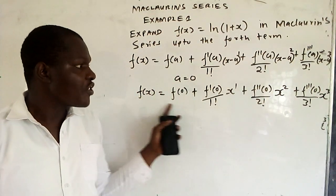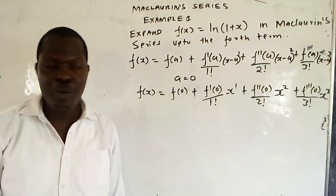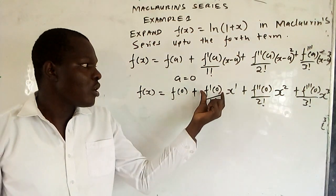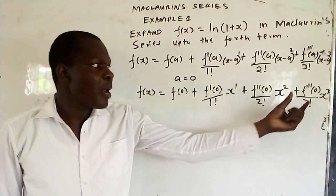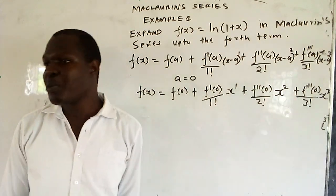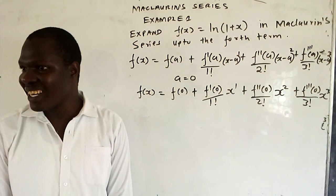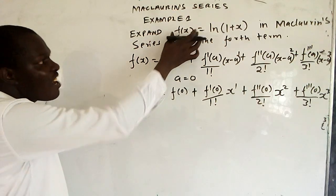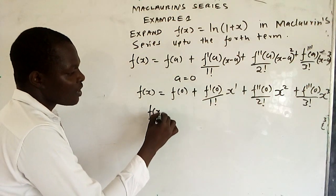This is the Maclaurin series expansion. So all we need to find is f(0), f'(0), f''(0), and f'''(0). You start with what you've been given as f(x).